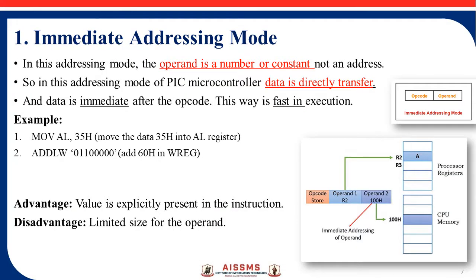The first is immediate addressing mode. In this addressing mode, the operand is a number or constant, not an address. For example, the instruction MOVLW 35H — this value 35H is directly stored into the AL register. Another example is 01100H — this binary information is directly stored into the ADDLW register. So in immediate addressing mode, you directly store the data value into the register.